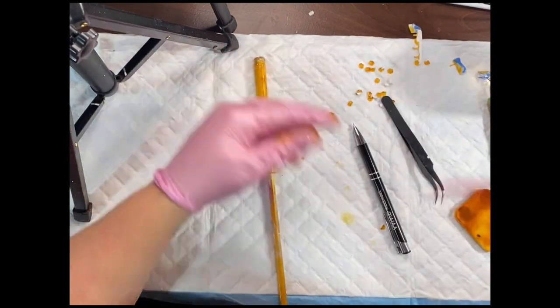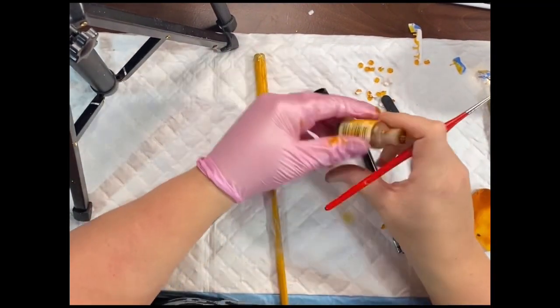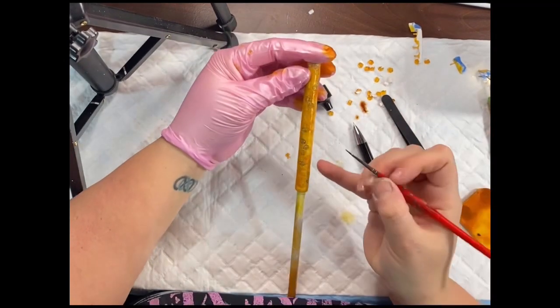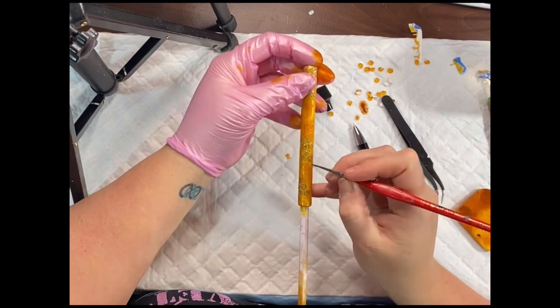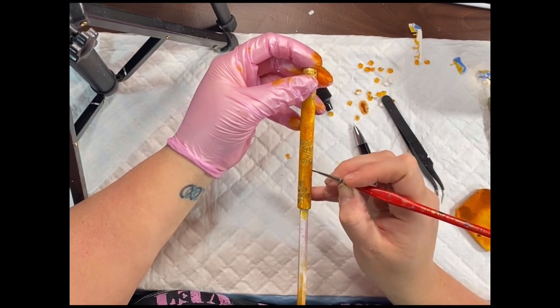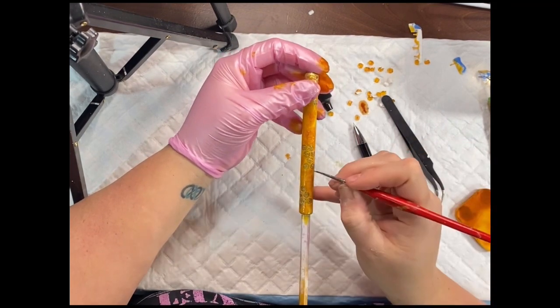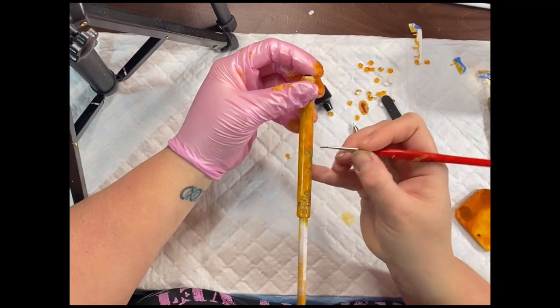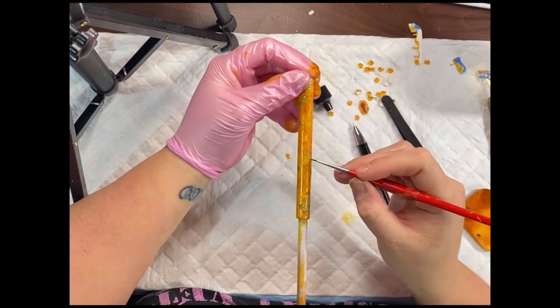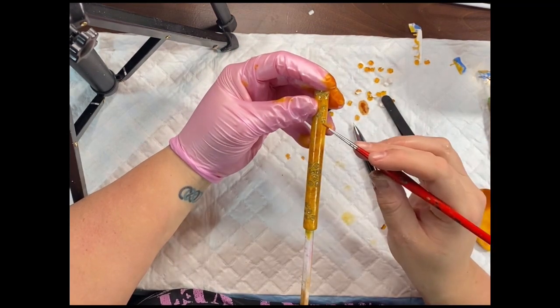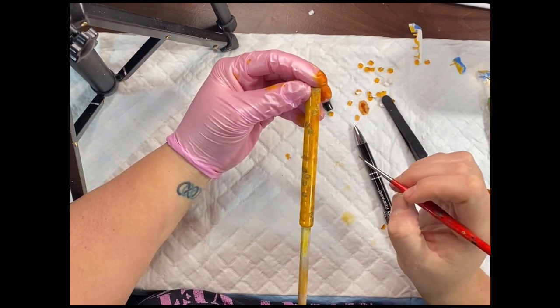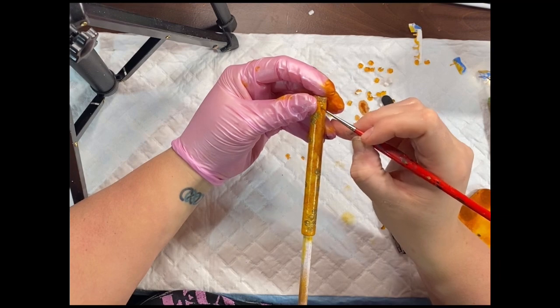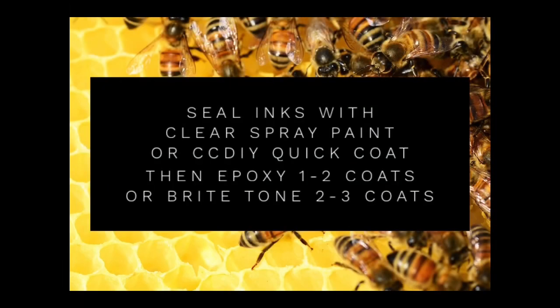So if you made a mistake, I grab a tiny paint brush and then the honeycomb and dab it along that scratch line. You will not see it unless you made a huge gouge and you can see your glitter from underneath. That's why you take your time with this. And then allow this ink to dry before you seal it with clear spray paint or quick coat. I prefer CC DOI Quick Coat and epoxy or bright tone until smooth.